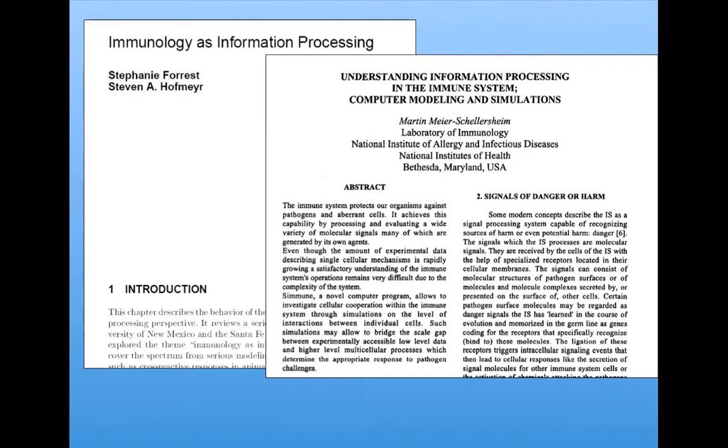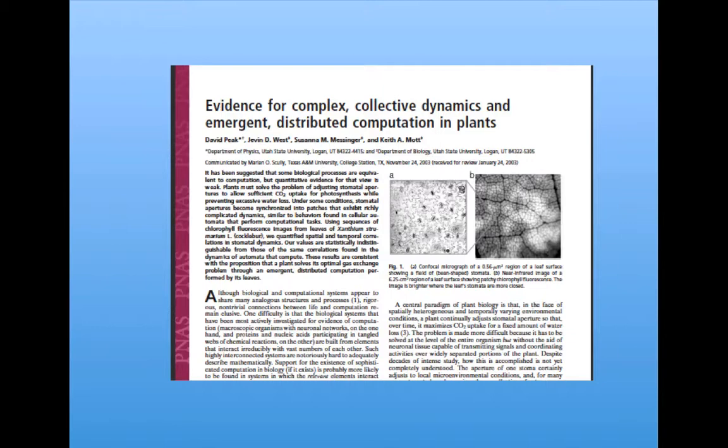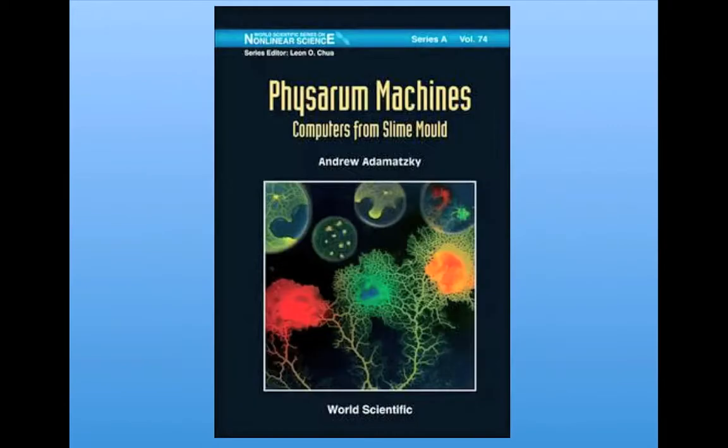The immune system is another example of a system people are looking at as doing information processing. Genetic circuits, cells and tissues, they're all now seen as doing computation of some kind. Even plants are now seen as being a venue for studying emergent distributed computation. Even more far out, perhaps, is looking at slime molds as a kind of computer, as is done in this recent book.